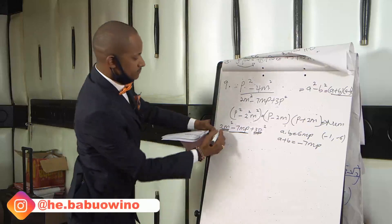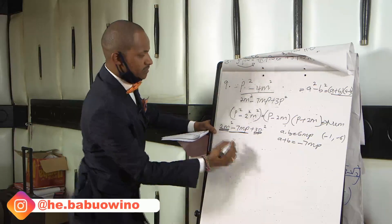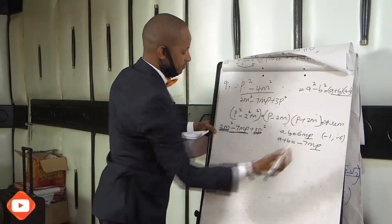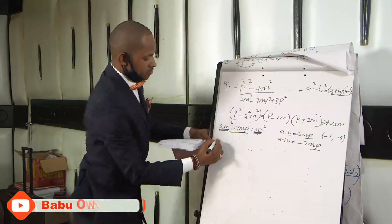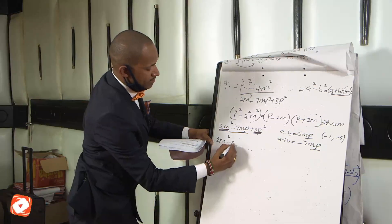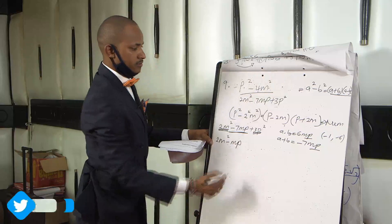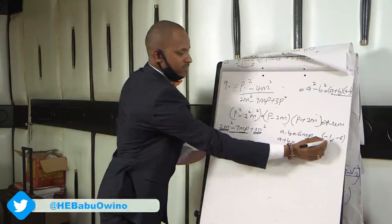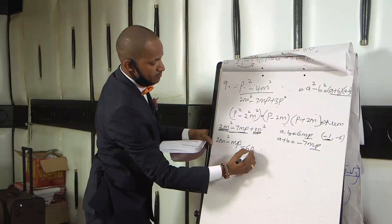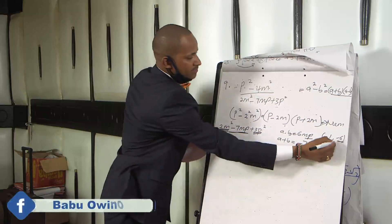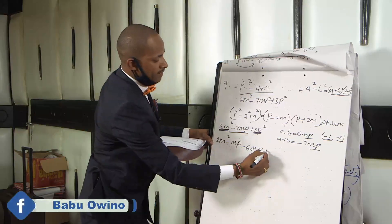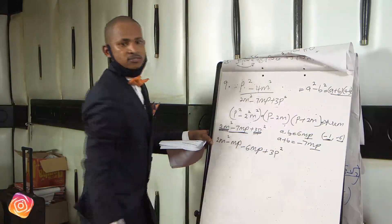You come back to the expression. Because we have mp terms, we replace minus 7mp using minus 1 and minus 6. So we have 2m squared minus mp — represented by minus 1 — then minus 6mp — represented by minus 6 — plus 3p squared.